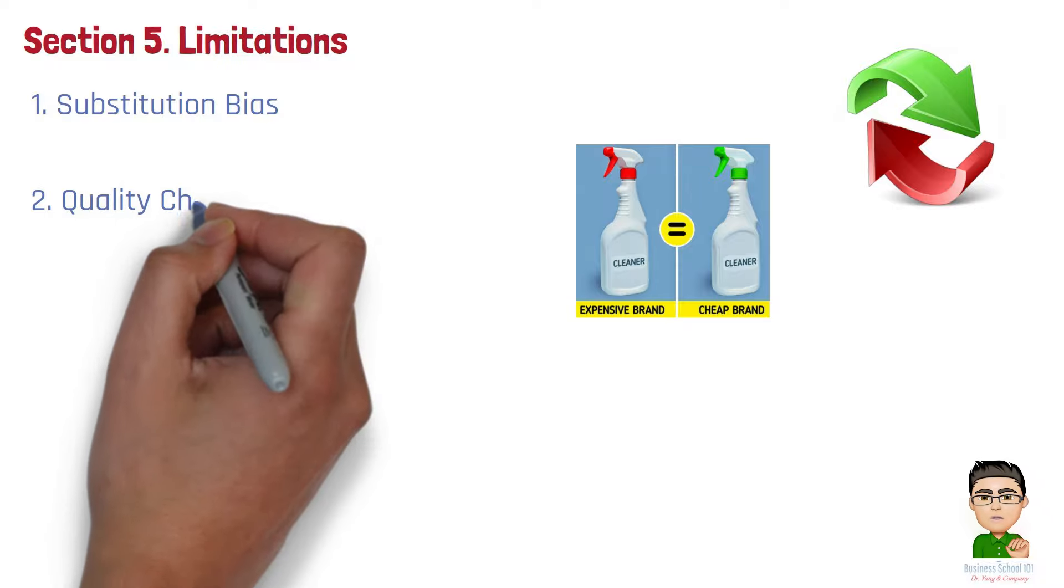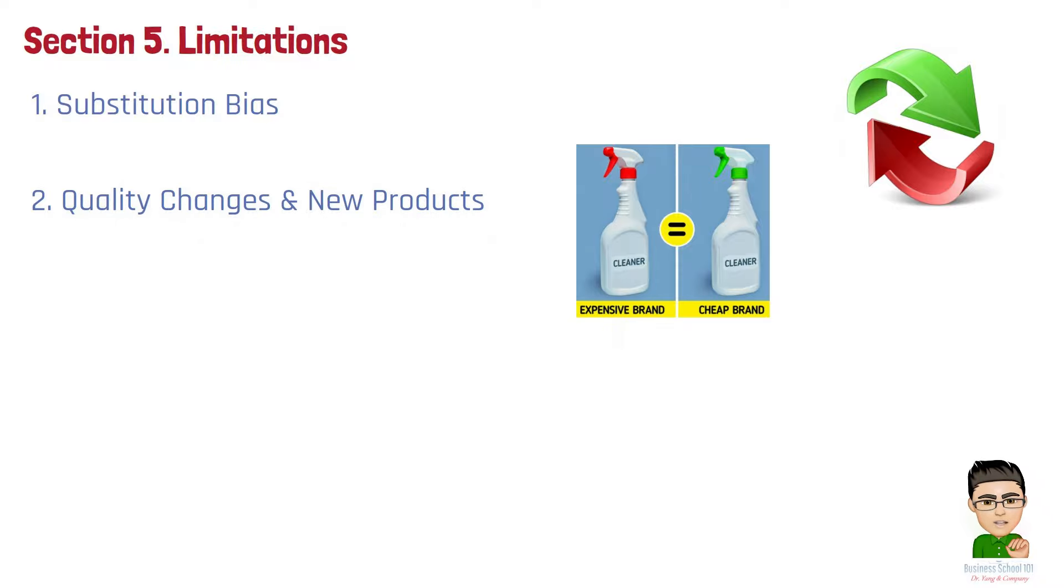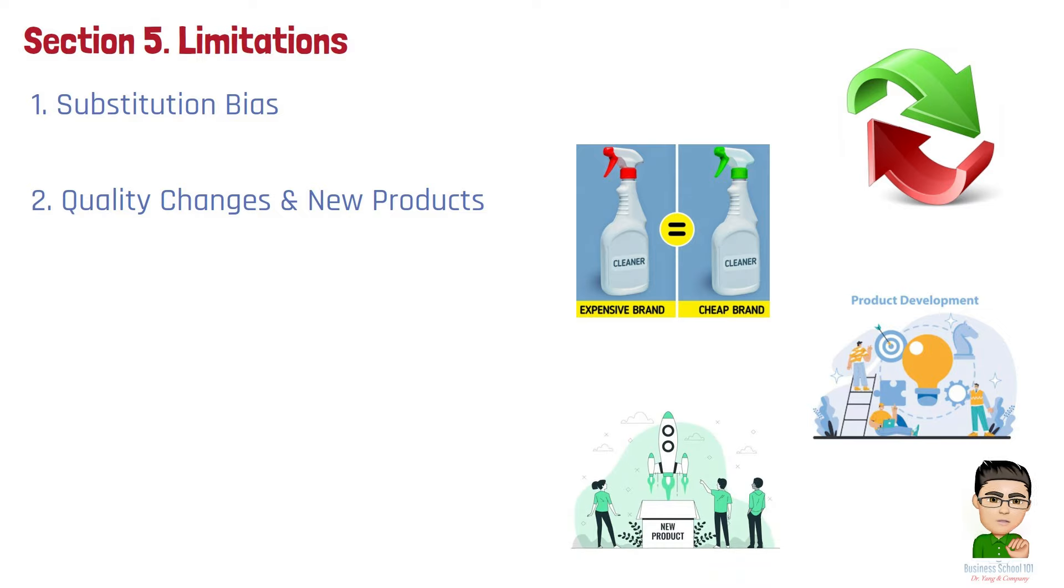Number 2. Quality changes in new products. The CPI may not fully account for improvements in product quality or the introduction of new products. If a product's quality improves or a new, better product is introduced, and the CPI does not adjust for this, it may overstate the cost of living.